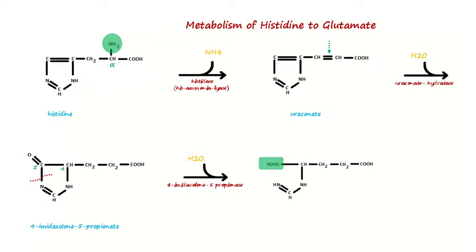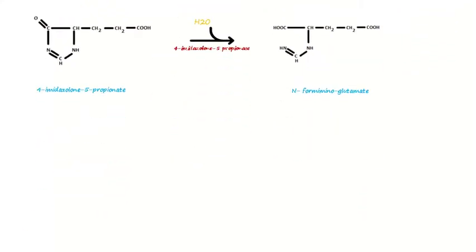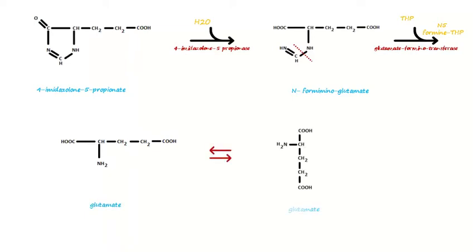In the last reaction, glutamate formiminotransferase enzyme will use a tetrahydrofolate molecule to transfer the glutamate. Notice the two last structures—they are both glutamate oriented in different angles.